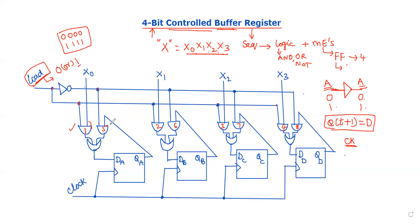For the second input of each AND gate, what about the second input? The second input is used to apply the previously stored data — it returns the stored data from the flip-flop outputs back as input. This is a feedback system. Either you can apply from the external inputs, or you can apply the data that was stored before. The output of each flip-flop feeds back to the second AND gate inputs.